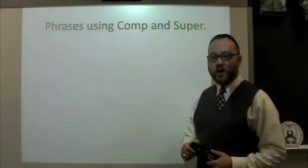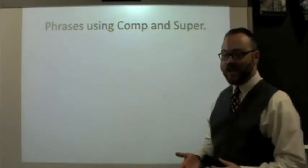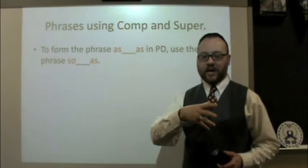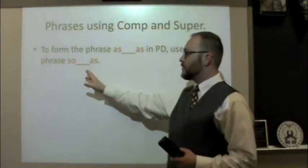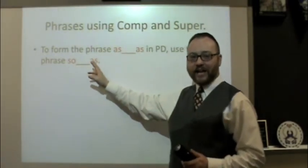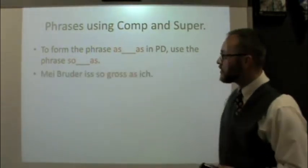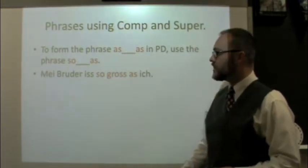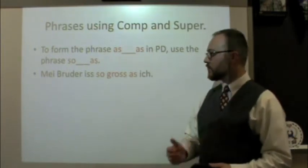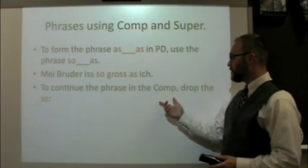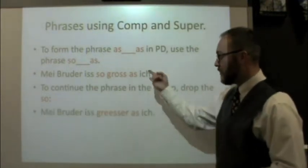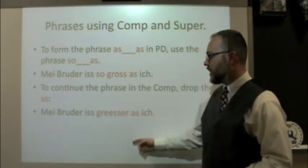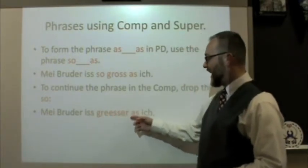When we use comparatives and superlatives we're usually comparing things to something else, so we need to know how to set that up. In English we say as blank as. In Dutch, instead of saying as blank as, we say so blank as — that's where our comparative form goes. For example, my brother is so gross as ich — my brother is as big as I am. To use the comparative, drop the so: my brother is griser as ich — he's bigger than I am.